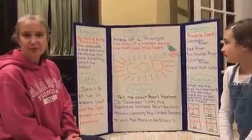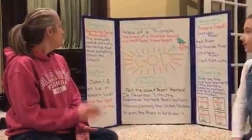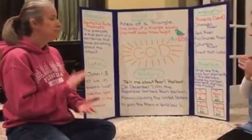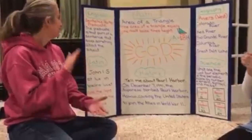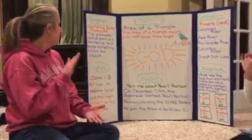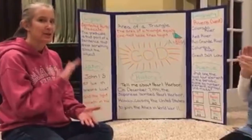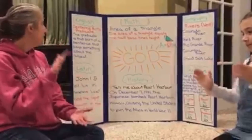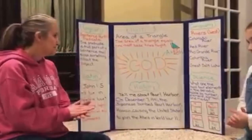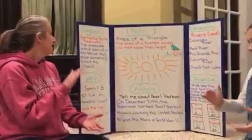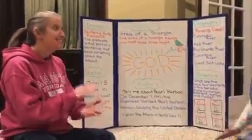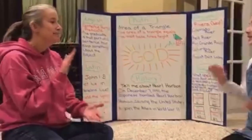Our English: you learned a chant. It goes: The predicate is that part of a sentence that says something about the subject. The predicate is that part of a sentence that says something about the subject. And then you can slow it down: The predicate is that part of a sentence that says something about the subject.